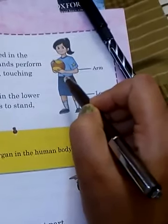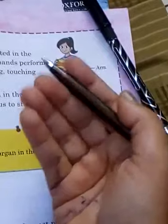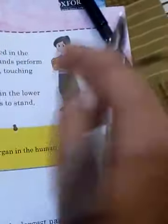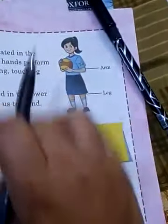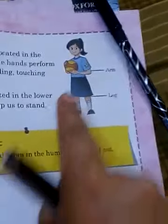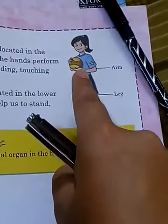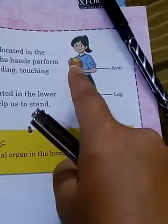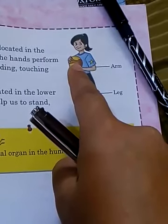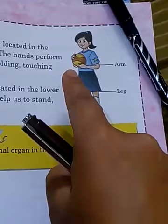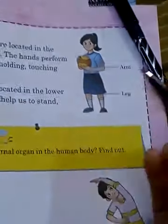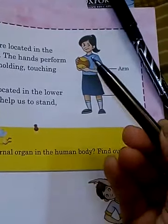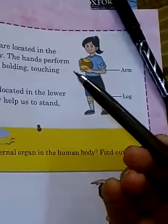We use our arms to hold anything, lift anything, to touch anything, and to point at things — like I am using my finger to point out this girl. You also can do this, because these parts of the arms help us to do many kinds of things.